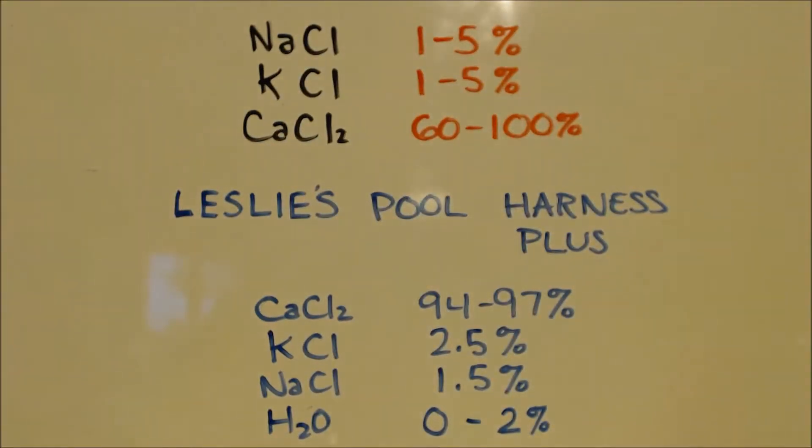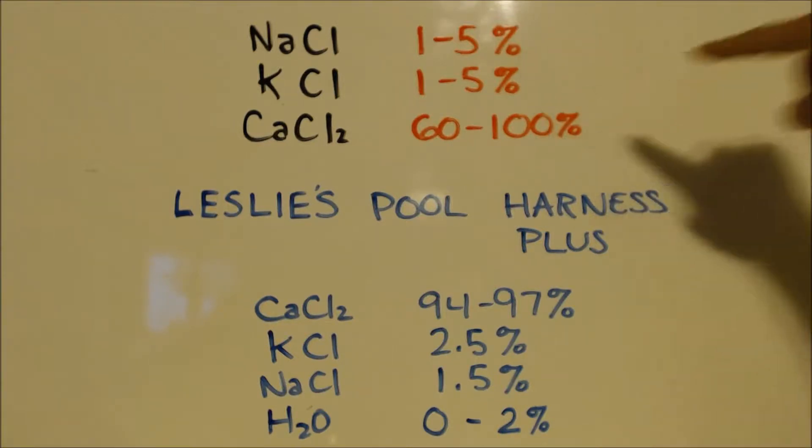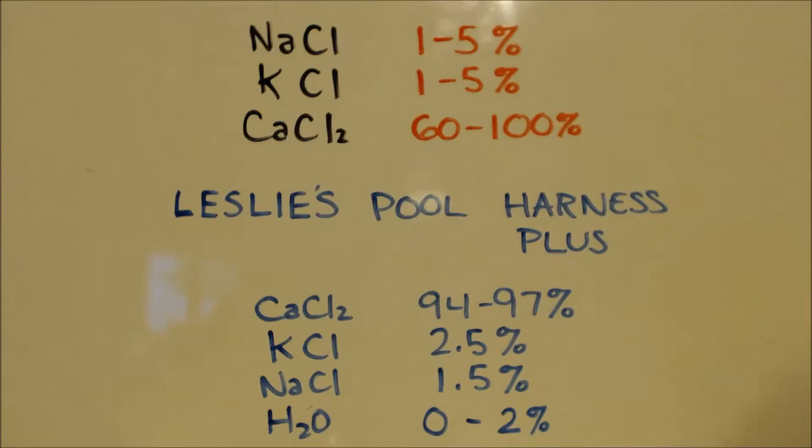All right, that's what I'm using: Damp Rid. You'll see up here on the top, this is from the MSDS. It can be anywhere from 60 to 100 percent. It's kind of stupid to buy. I did a video on how to get calcium chloride or anhydrous calcium chloride.